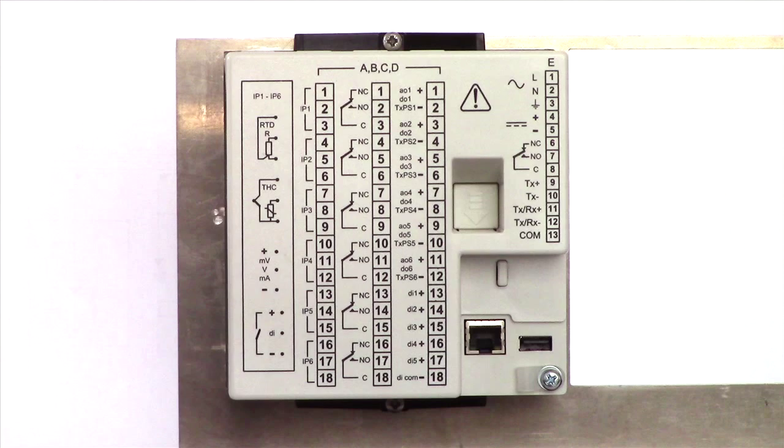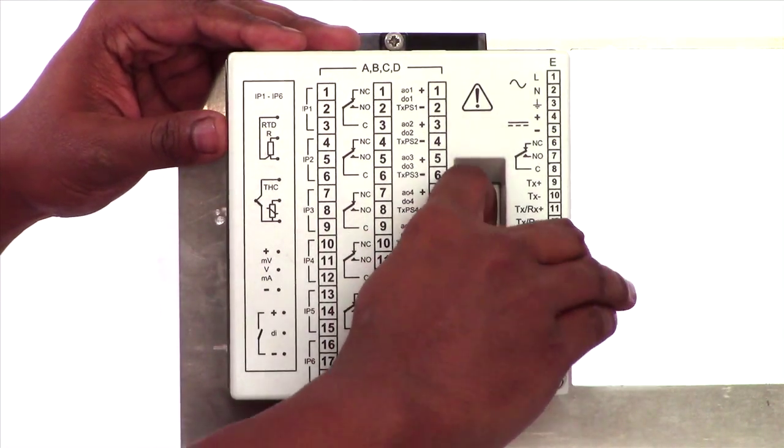To connect a thermocouple sensor to the RVG200 you need access to the connection terminals which are located at the rear of the instrument behind the terminal cover.